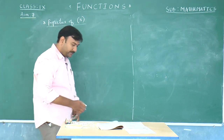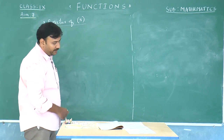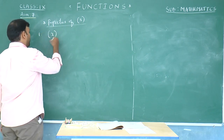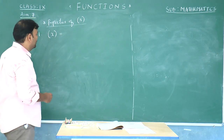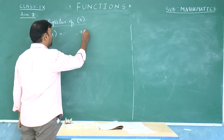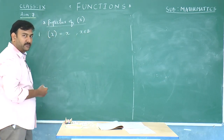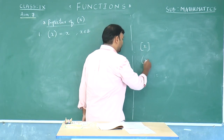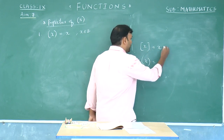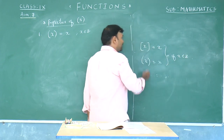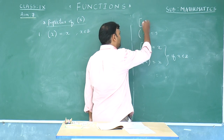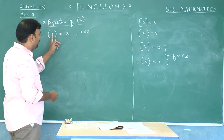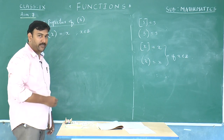The first property of the least integral value: if the number inside the function is already an integer, then the least integral value of x is going to remain x. Both the greatest integral value and the least integral value remain as x when x is an integer. For example, the least integral value of 3 is 3 and the greatest integral value of 3 is also 3.